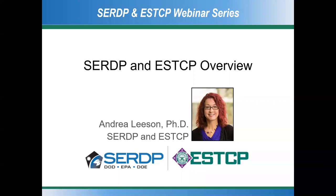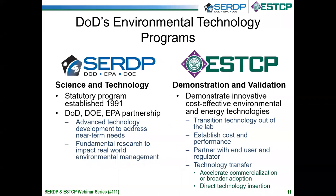Thank you, Rula, and thank you everyone for joining us. Before we get into our technical talks, I'd like to give a brief overview of who we are. We have two companion programs. The first is CERTIP, the Strategic Environmental Research and Development Program — a research and development program partnering with DOD, DOE, and EPA to develop fundamental research to impact real-world environmental management. ESTCP is our Environmental Security Technology Certification Program, where we conduct demonstration and validation of technologies from CERTIP, with the goal of transitioning them from the lab into the field.